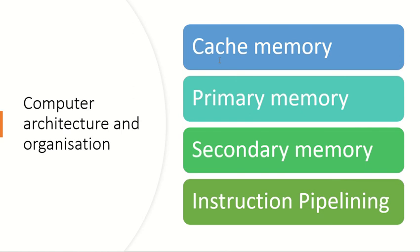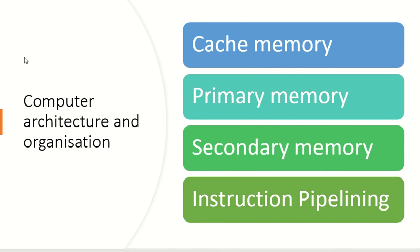The next topic is computer architecture and organization. You should know what is cache memory and why it is used, what is primary memory, what is secondary memory, what are the types of secondary memories, what is instruction pipelining, and what are pipeline hazards. These are the topics you should go through for the interview at VLSI companies. Thanks for watching — like, share, and subscribe to my channel. Thank you.